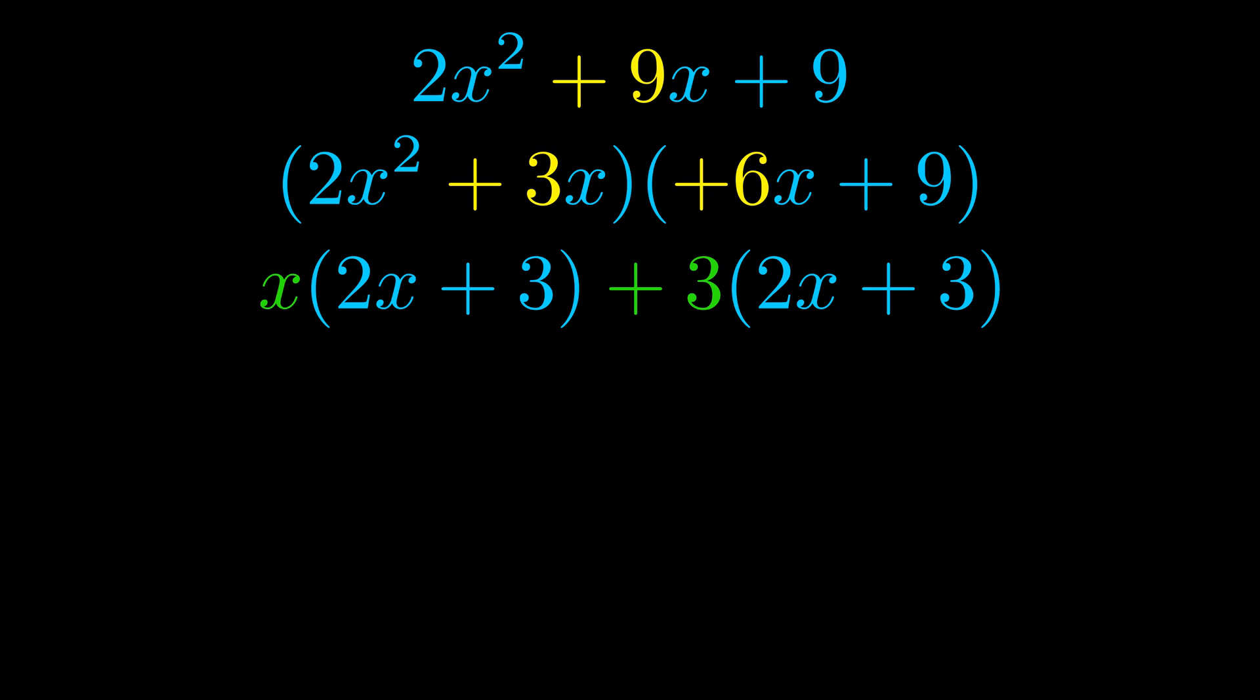Notice also how what remains inside of the parentheses is the same in both cases. The blue values are the same. Those blue values will become one of our factors and we will combine the two green values, the GCFs that we pulled out, to get the other one. And that is our fully factored equation.